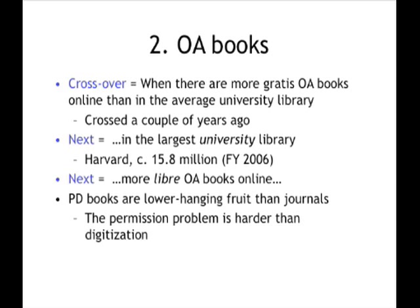One thing that took some of us by surprise was how quickly we would get to this crossover point. Most open access advocates, including me, focus on journal literature because journal article authors are not paid for their articles — it's royalty-free literature, so they can consent to open access without giving up revenue. That looked like the low-hanging fruit. Well, public domain books are even lower. The only problem is that public domain books have to be digitized. It turns out it is easier to digitize public domain books than to get permission from authors to get their works online. We have a hard cultural problem between us and open access to literature, and we only have a technical problem between us and open access to public domain books.